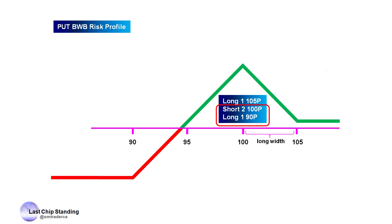At expiration, if the underlying is at 105 or higher, we will get to keep the credit we received. It doesn't matter if it goes to 1000, 2000, or to the sky, because the 105 put and all the put options below 105 will expire worthless.